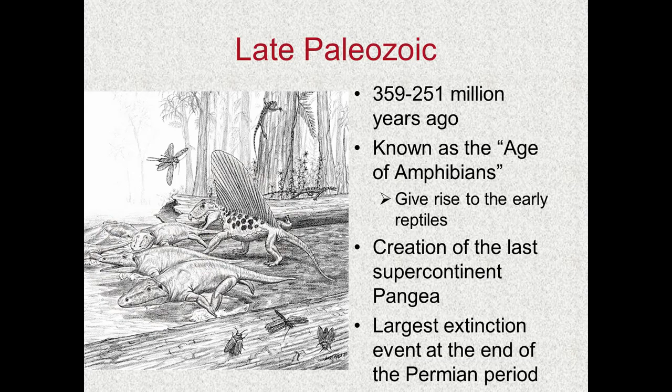Remember we talked about Rodinia before — the first supercontinent in the Precambrian. Rodinia split apart and then came back together about 900 million years later in the form of Pangea. At the very end of the late Paleozoic, we see the Earth's largest extinction event ever, called the Permian extinction event. We'll talk about what we think caused it and what happened as a direct result of that extinction event.